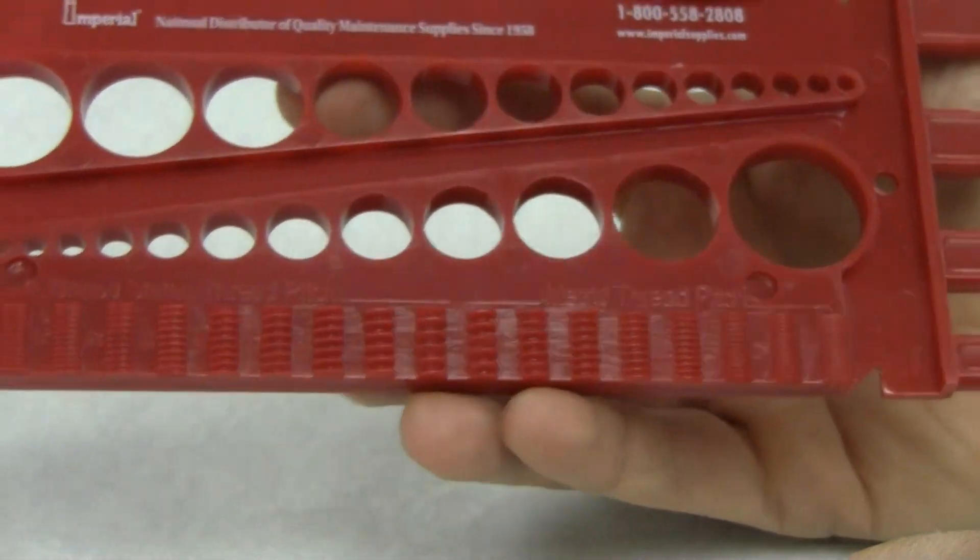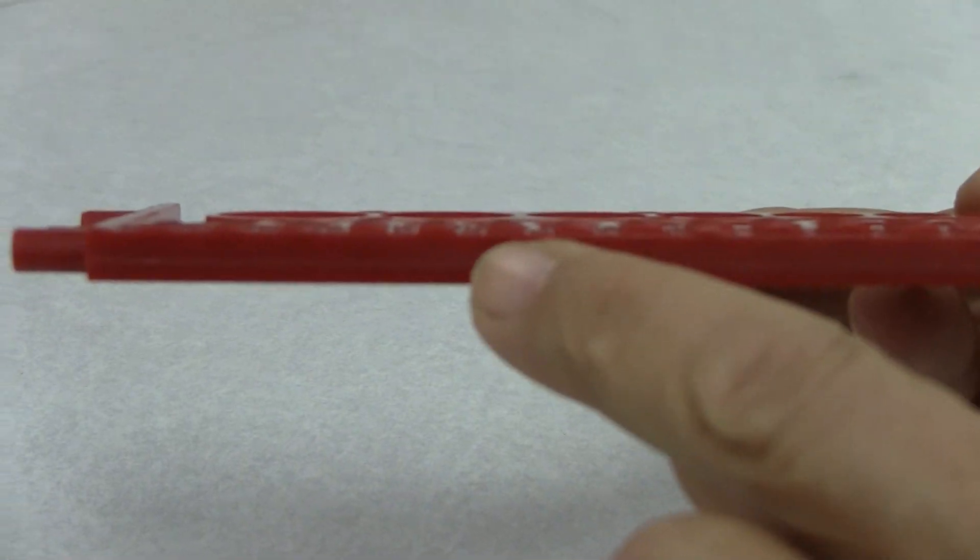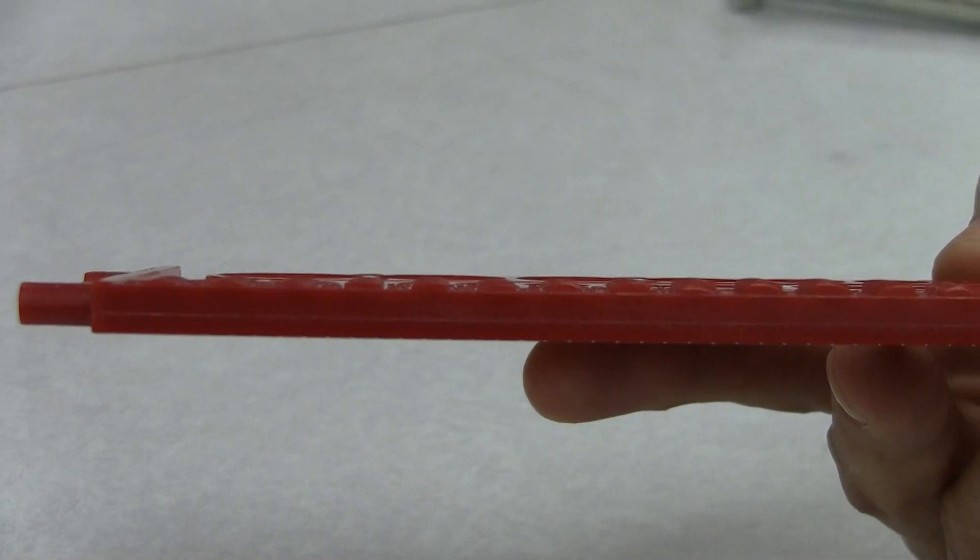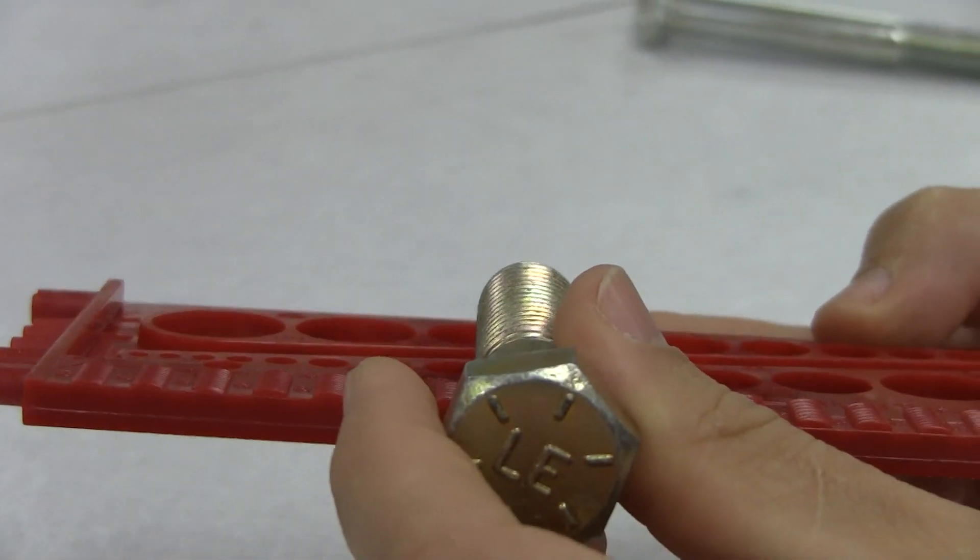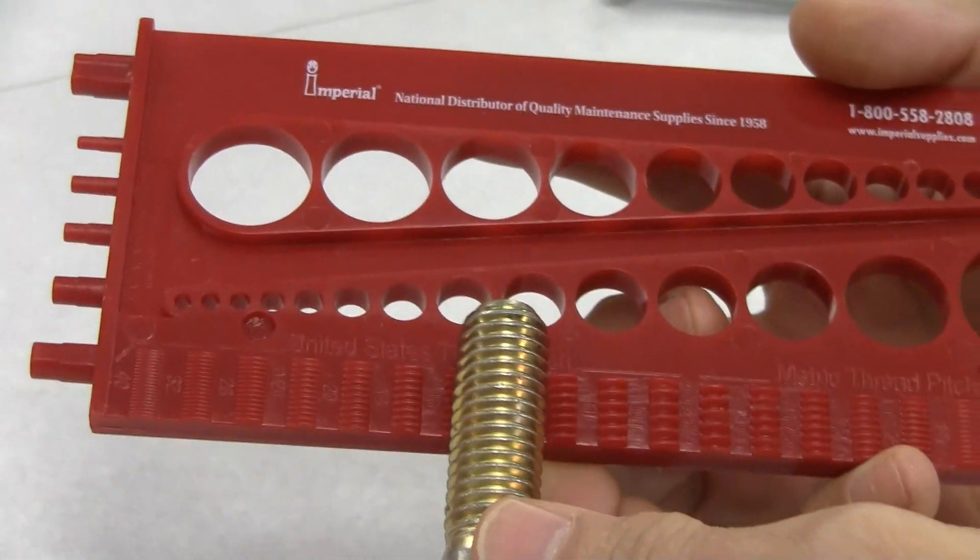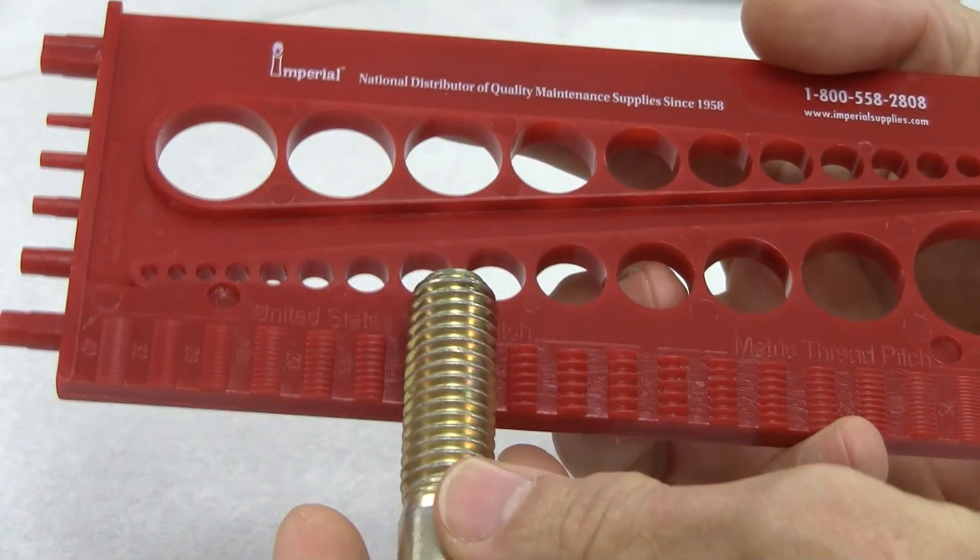In order to use this gauge, you will have to notice that each one of these thread pitch gauges do have a slight arc to them, and what we want to do is set the cap screw right on the very top at the high point of that arc, and then slide it up and down like this.